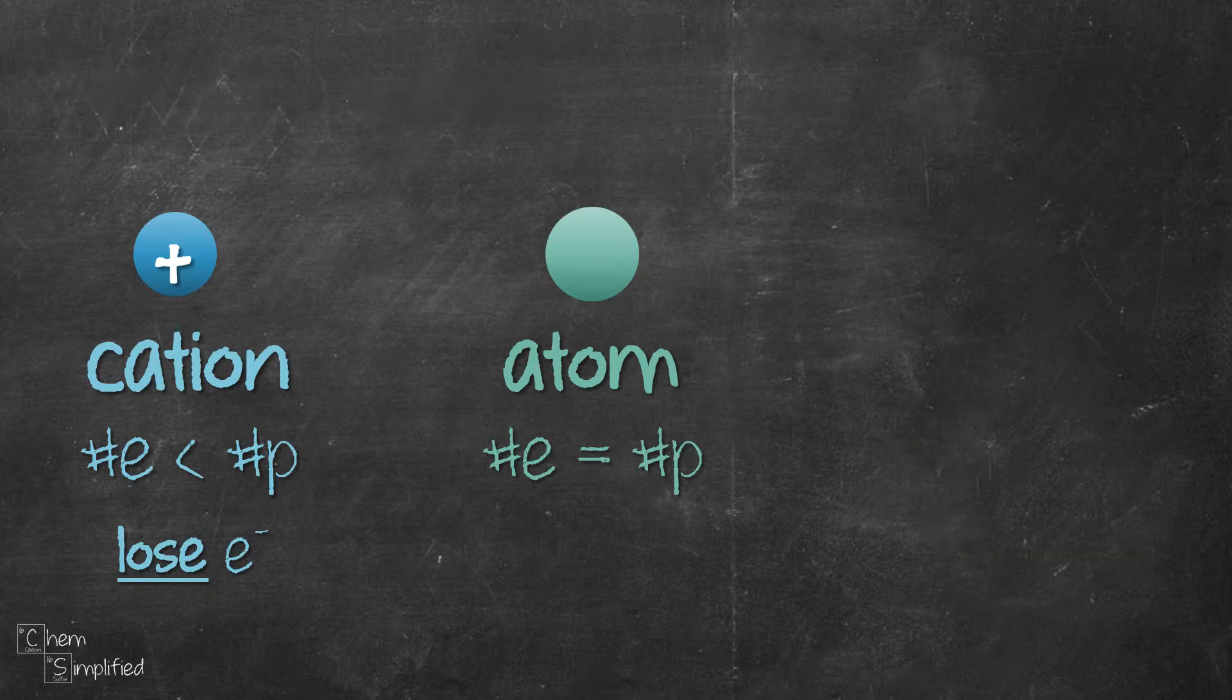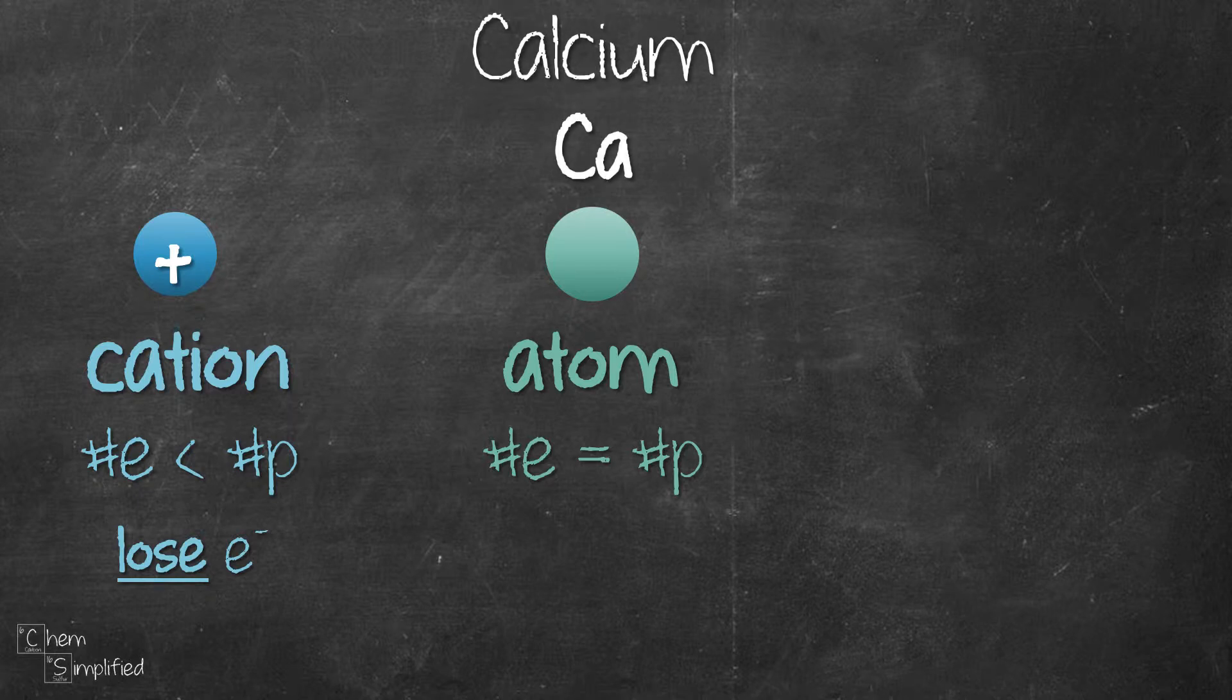Let's try calculating the number of electrons for calcium. For the atom, calcium has an atomic number of 20. That means the number of electrons is the same as the number of protons, which is the same as its atomic number, 20.